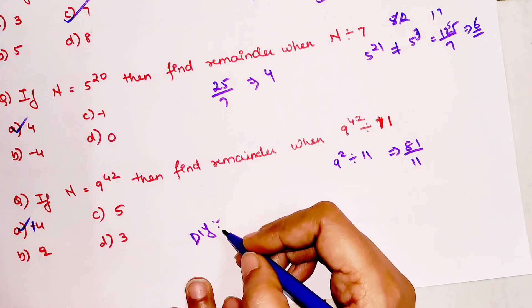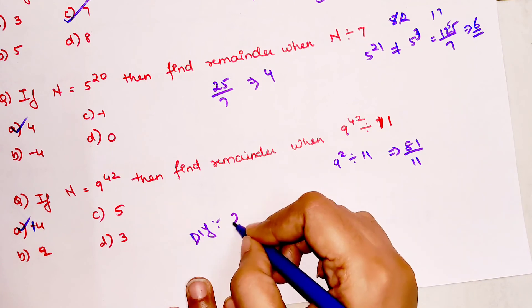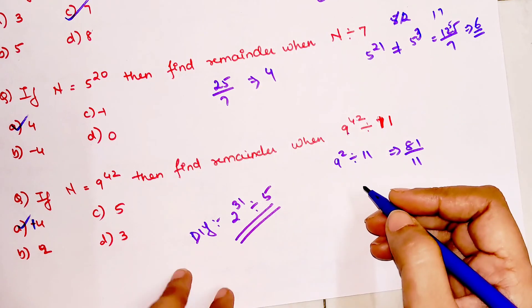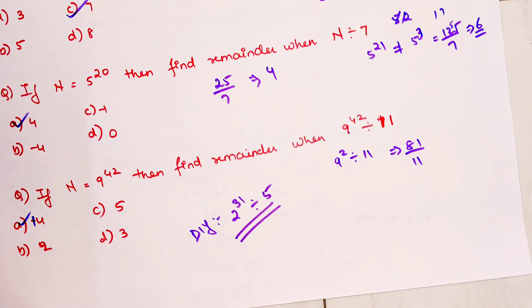Do let me know what is the remainder when you divide 2 raised to 31 by 5. Do let me know your answers in the comment section. So that's it for today. I will soon see you in the next video.